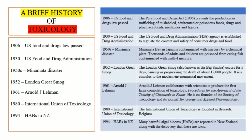In 1906, the US Pure Food and Drugs Act was passed, banning the trafficking or transport of mislabeled, adulterated, or poisonous foods, medicines, or liquor. Then in 1930, the US Food and Drug Administration was established as an agency to regulate the content and safety of consumer drugs and food, ensuring quality for consumers taking drugs and food.